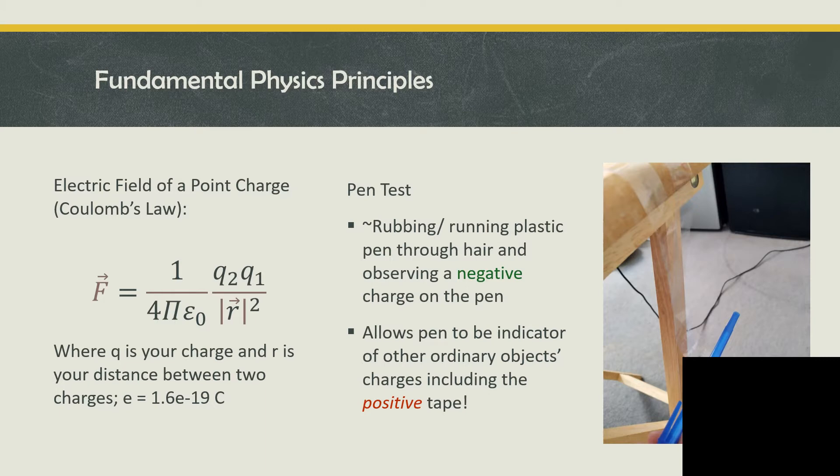We also used a pen test, which simply recognizes that if you rub or run a plastic pen or glass rod through your hair or other similar materials, it will become negatively charged. With this information, we were able to test and see what charge an electrically charged piece of clear tape would have. We concluded it is positively charged because opposite charges attract to each other, and the tape was attracted to the negatively charged pen when both objects were near each other.